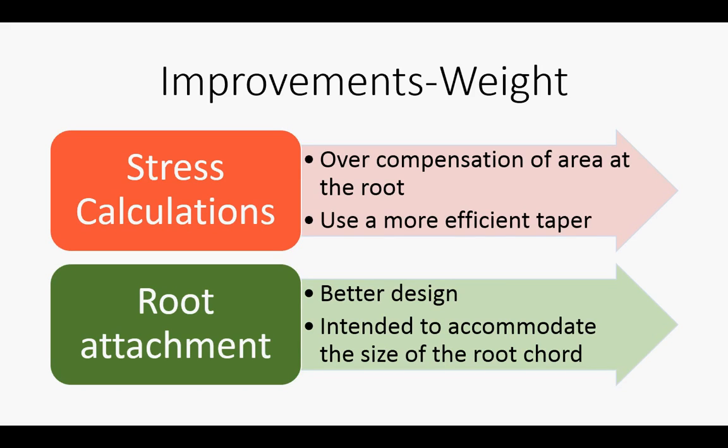However, our design could have been improved weight-wise. As shown earlier, the peak stresses in our blade were calculated to be in the middle of their spans, which meant that at the roots, where the stresses were smaller, we by far overcompensated the cross-sectional area required to overcome these stresses imposed on the blade. By using a more efficient taper that tailored to the loads on the blade, rather than simply applying the 1 over R chord distribution along the whole blade, could have reduced our weight and given us a better merit function.